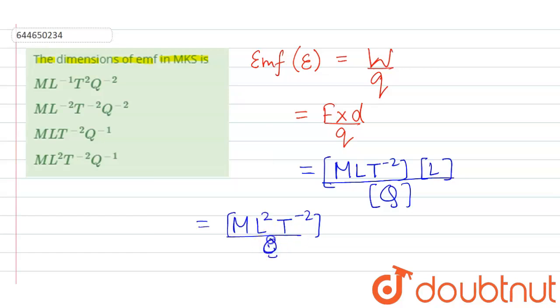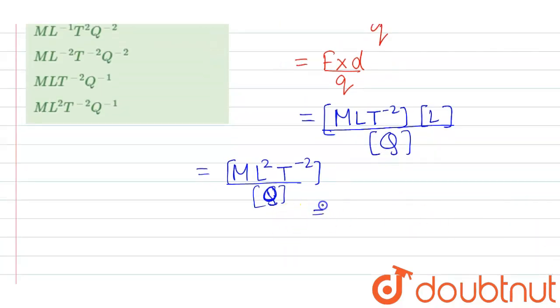Which on further solving here we get ML2 T minus 2 Q minus 1.